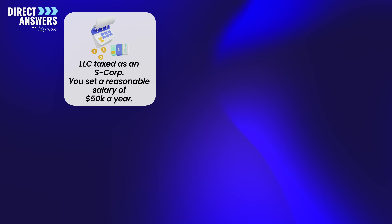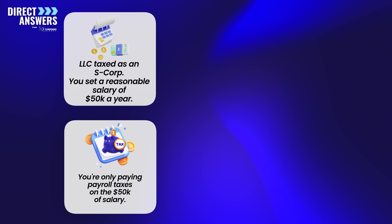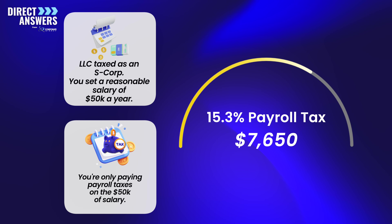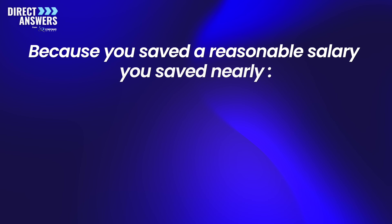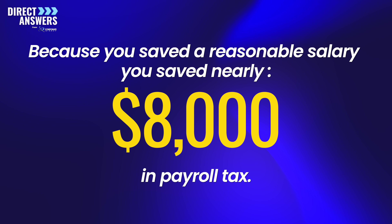However, let's say you set a reasonable salary of $50,000 a year for yourself. Because of that, you're only paying payroll taxes on that $50,000. So you'd pay 15.3% of $50,000, which is about $7,700. Because you set a reasonable salary, you saved almost $8,000 in payroll tax. That's the key benefit of having a business taxed as an S-Corp.